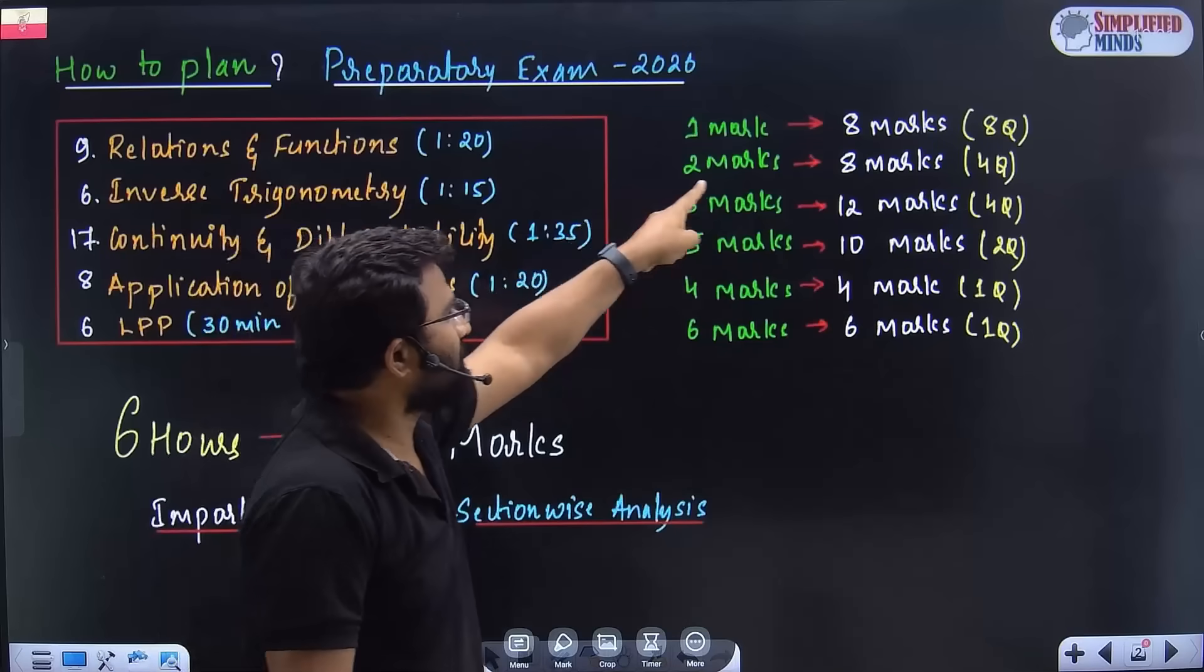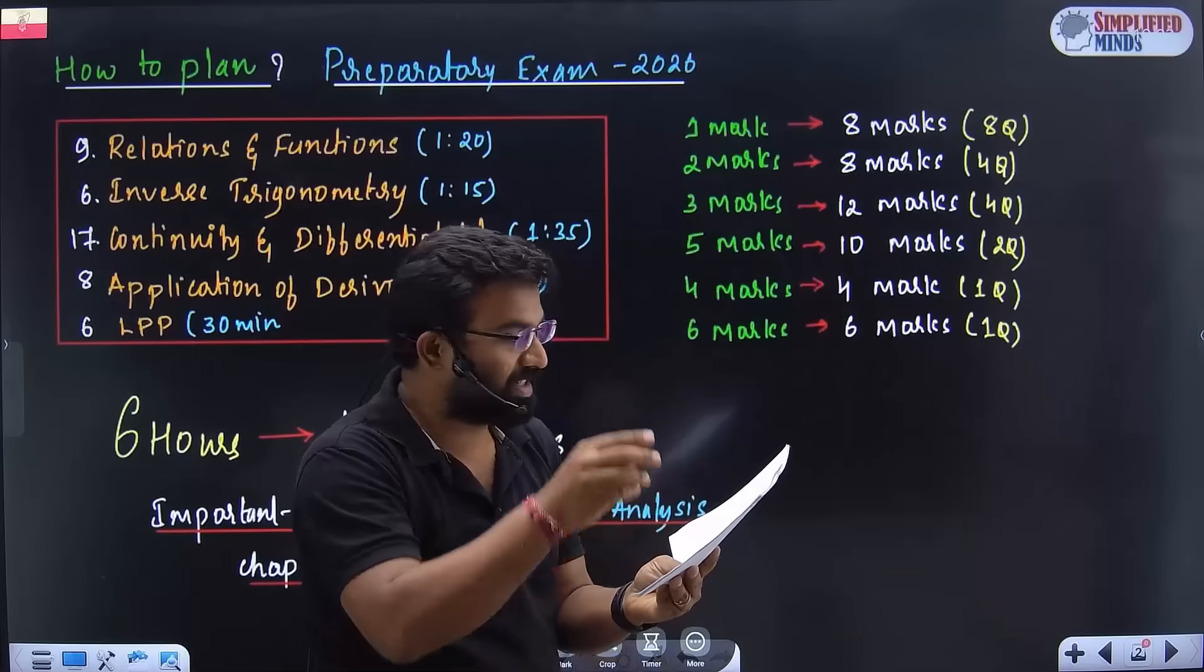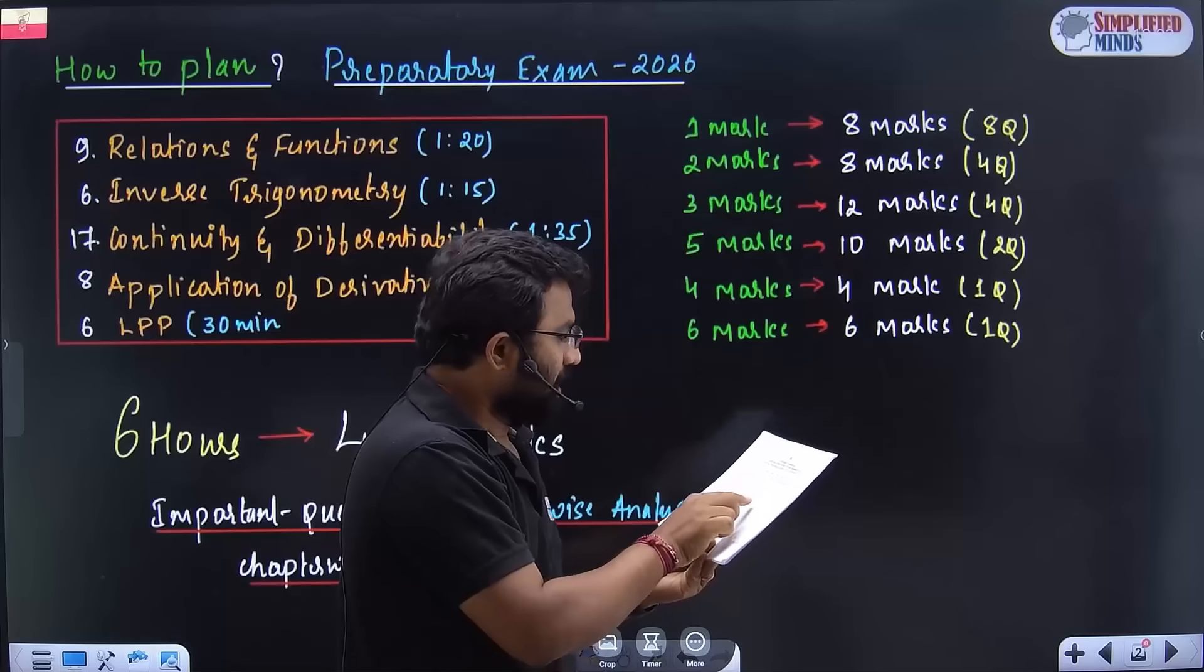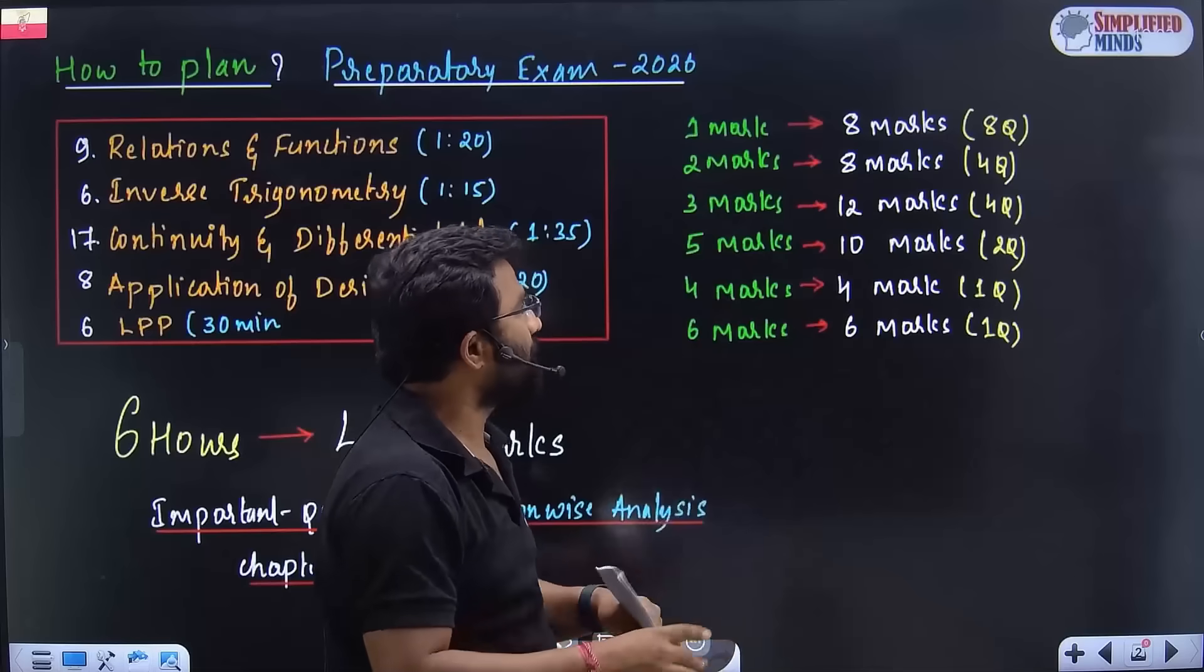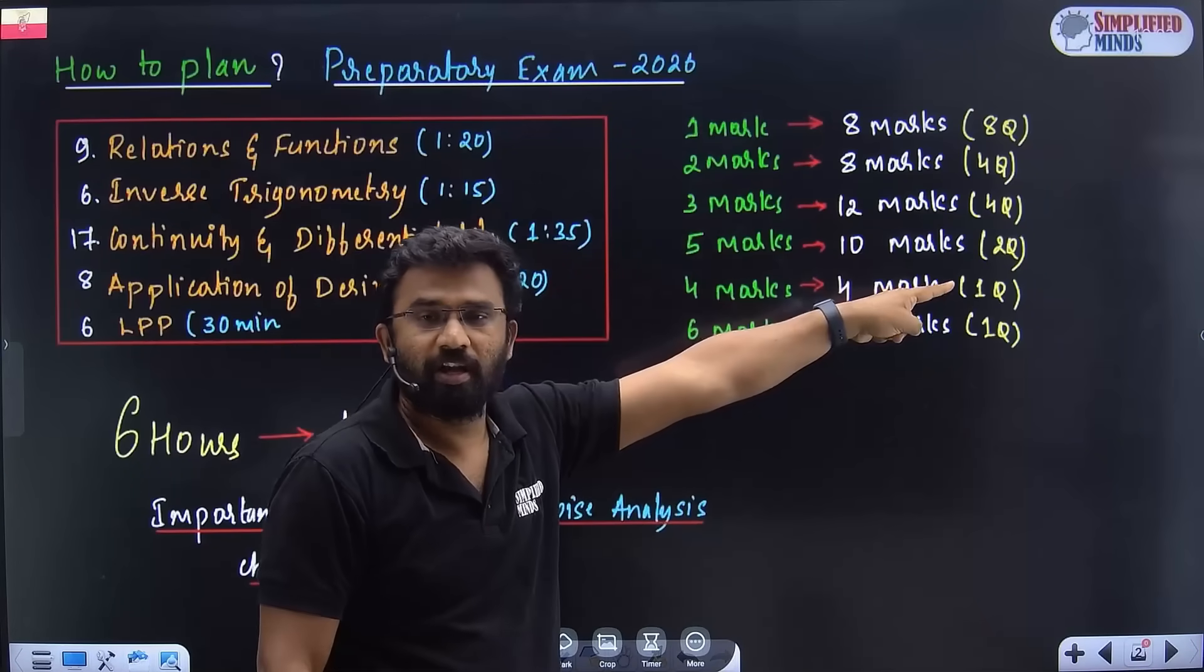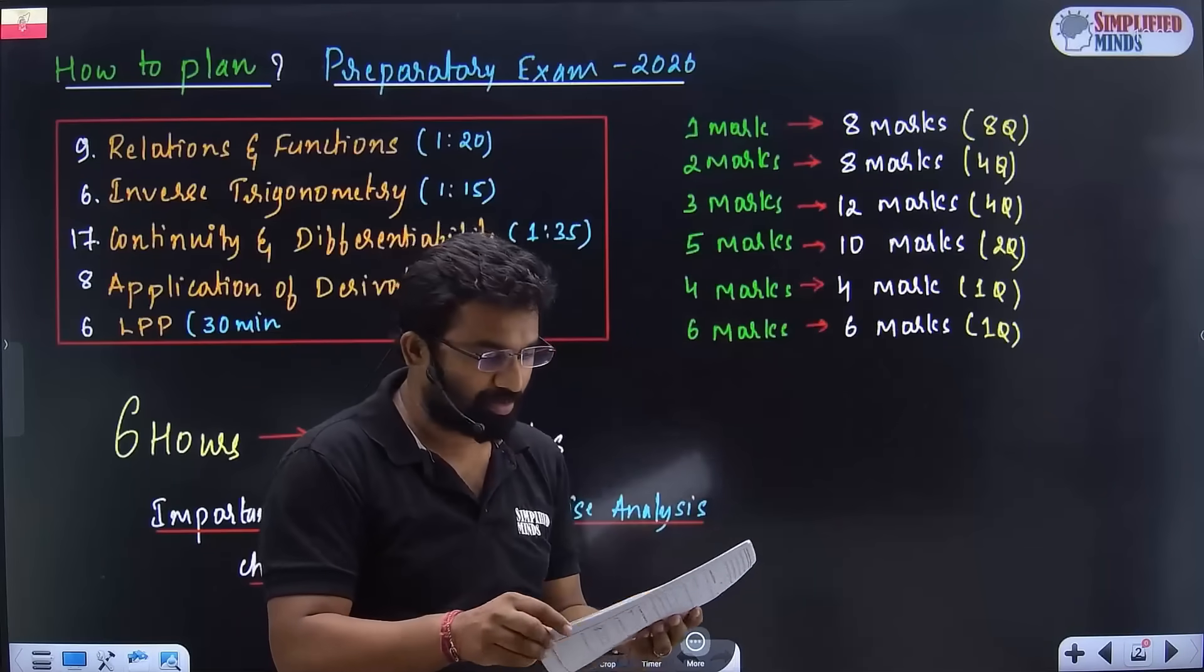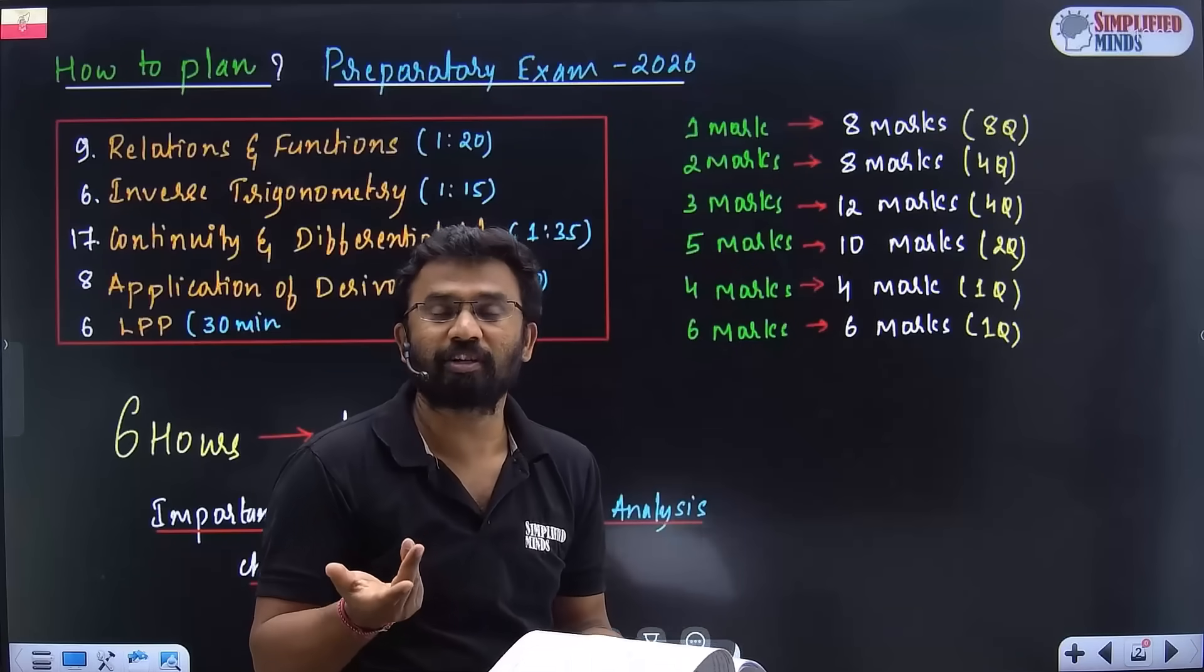The one mark has literally eight questions. There is no other four or five chapters which carries eight questions. You have Continuity, Differentiability, Application of Derivatives, and Relations Functions, Inverse Trigonometry - almost eight questions cover. Two markers, almost four questions. Two markers you have - almost six questions, four questions cover.